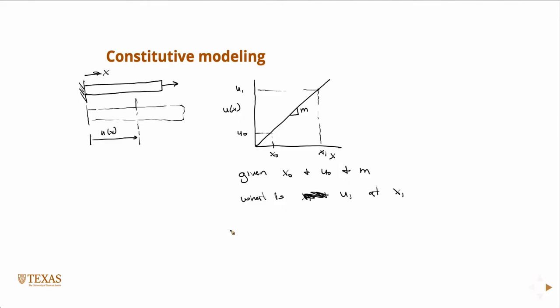So we can just write down u1 equals m times (x1 minus x0) plus u0. And then, let's just say that delta x is x1 minus x0, so then I have m delta x plus u0.